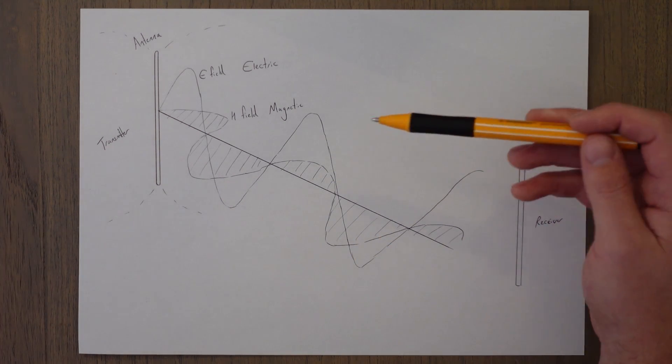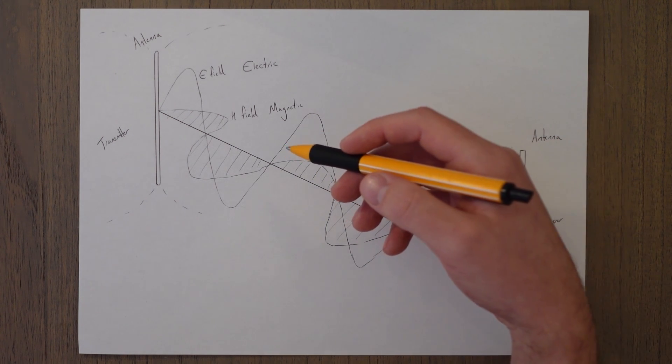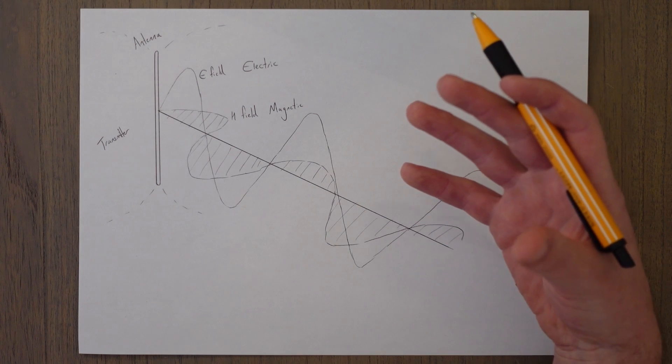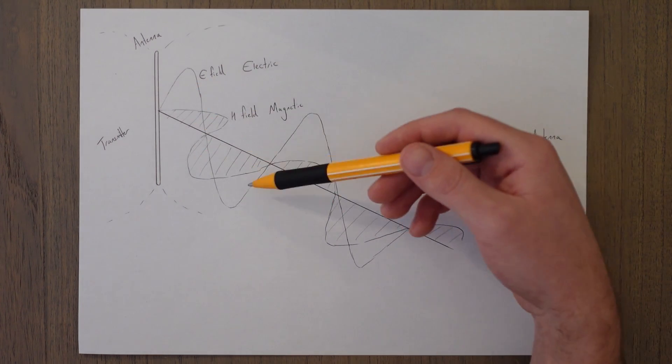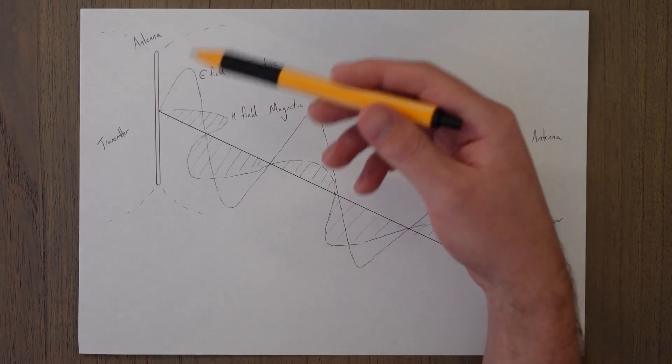With radio waves we are generally interested in receiving the electrical part of this wave. The direction of the electrical part of the radio wave defines something called its polarization. In this example we would say it's vertically polarized because the electric field, the E field, the electric wave is vertical.